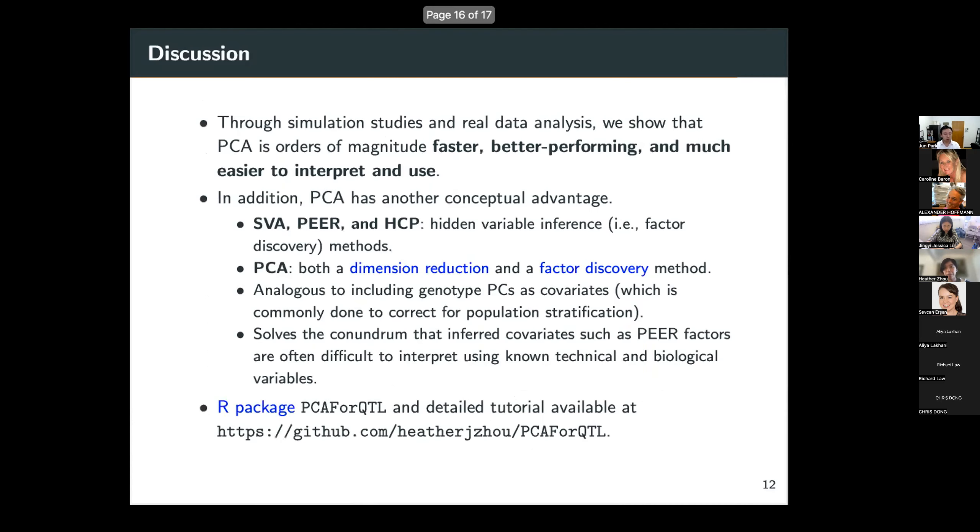So those were our main results. In summary, through simulation studies and real data analysis, we showed that PCA is orders of magnitude faster, better performing, and much easier to interpret and use. In addition, something that I haven't mentioned so far is that PCA has another conceptual advantage. So SVA, PEER, and HCP are all hidden variable inference methods, i.e. factor discovery methods. On the other hand, PCA can be used and interpreted as both a dimension reduction and a factor discovery method.